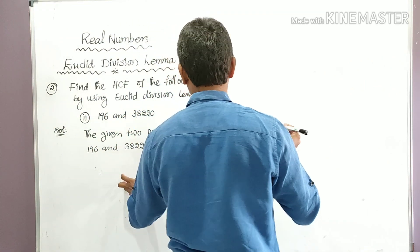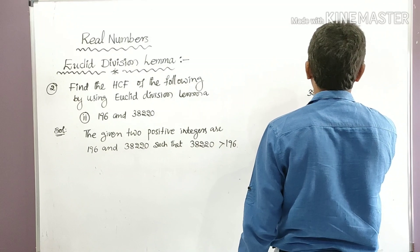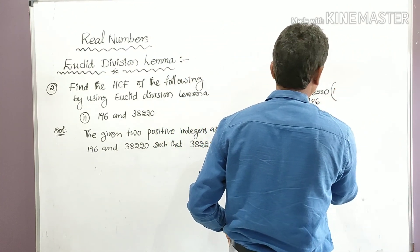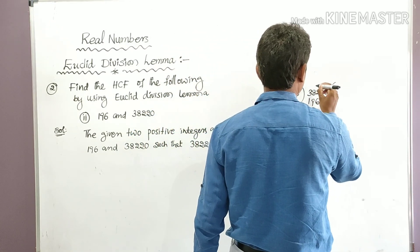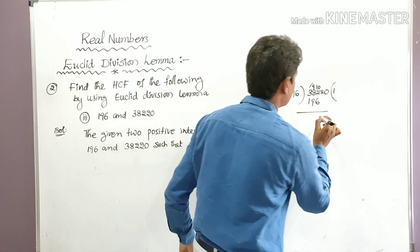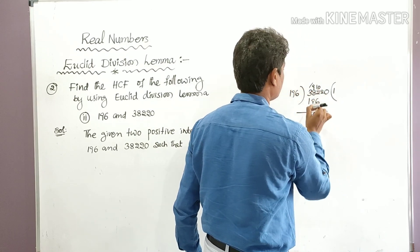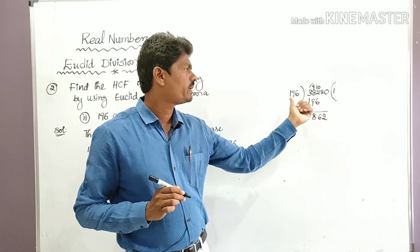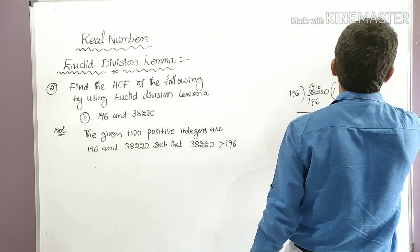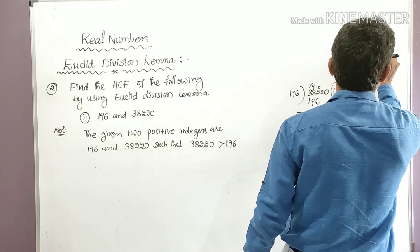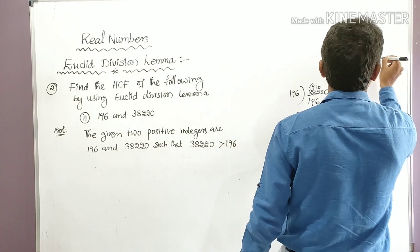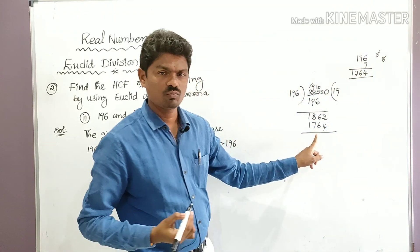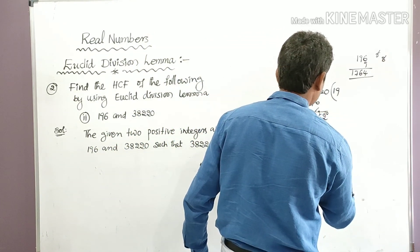Dividing 38,220 by 196: it goes once into 382, giving 196. Subtracting: 382 − 196 = 186, bring down 2 to get 1862. Check: 196 × 9 = 1764. Subtracting 1862 − 1764 = 98, bring down 0 to get 980.